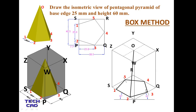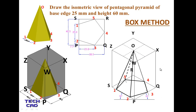Now join the apex O to all the corners of the pentagonal base: O to 2, O to 1, O to 5 — this is a hidden line since point 5 is not visible. Similarly draw O to 4 and O to 3. This completes the isometric view of the pentagonal pyramid with base edge 25 mm and height 60 mm.